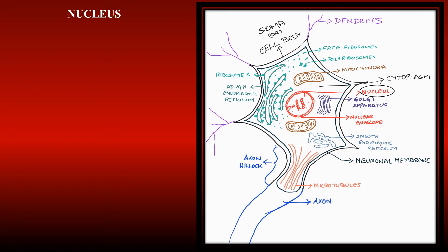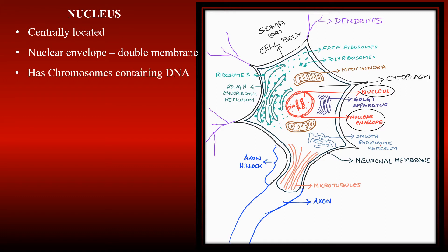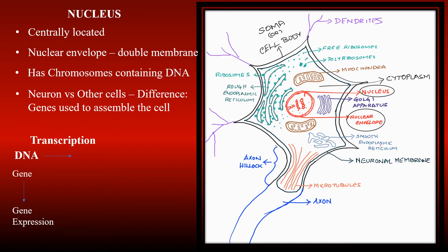One of the main organelles in a cell is the nucleus. It is centrally located and has a double membrane nuclear envelope that separates it from the cytoplasm. The nucleus has chromosomes which contain DNA that we obtain from our parents. So what differentiates neurons from other cells? DNA, that is the work of genes. Genes are specific parts of DNA that produce specific proteins which are used to assemble the cell. DNA contains genes. Genes undergo gene expression.